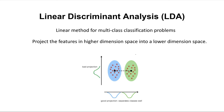What LDA does is project our features and data from a higher dimension space into a lower dimension space. The goal of linear discriminant analysis is to project the features from high dimension to low dimension while also separating the classes really well. A good projection is when we separate the classes well. A bad projection is when the means of the two classes are very close to each other — they're not well separated after projection from higher to lower dimension.